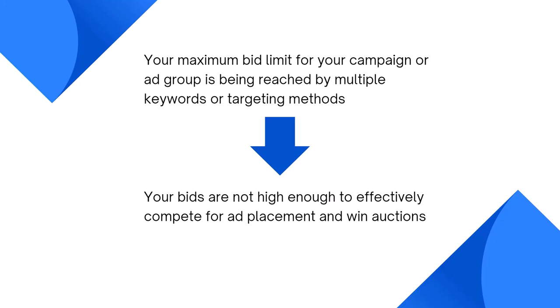In theory, what this message means is that your maximum bid limit for your campaign or ad group is being reached by multiple keywords or targeting methods. Essentially, your bids are not high enough to effectively compete for ad placement and win auctions. If you see a message that says, for example, 95% of impressions or spend is limited by your maximum bid limit, it means that for 95% of spend, your bid strategy would have set a higher bid but was prevented from doing so by the max bid limit.